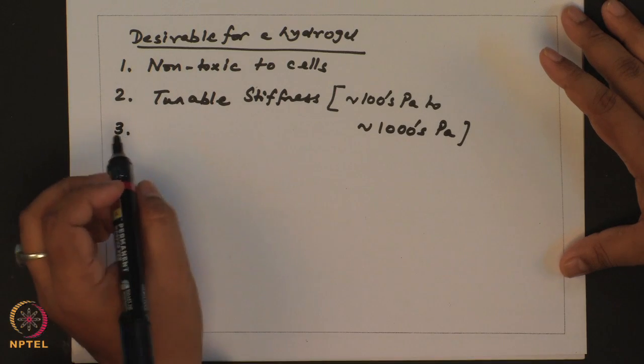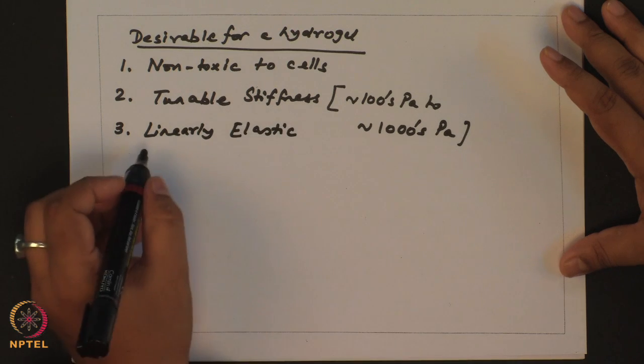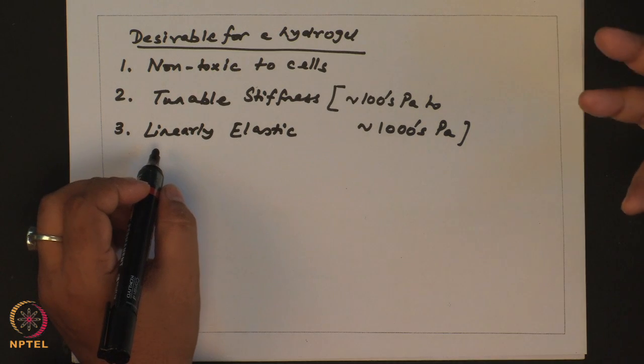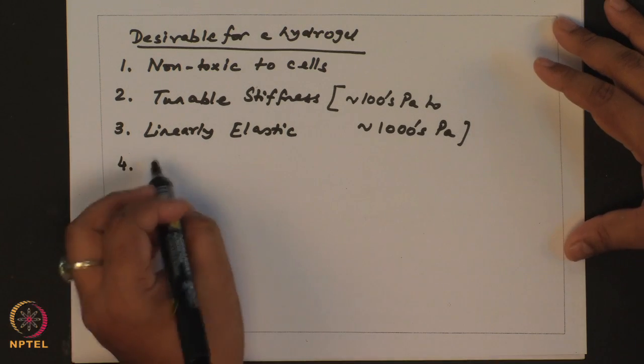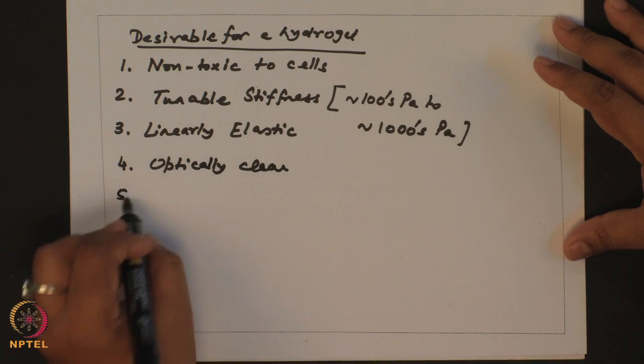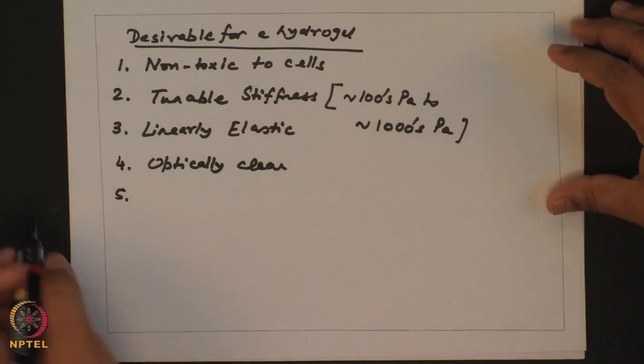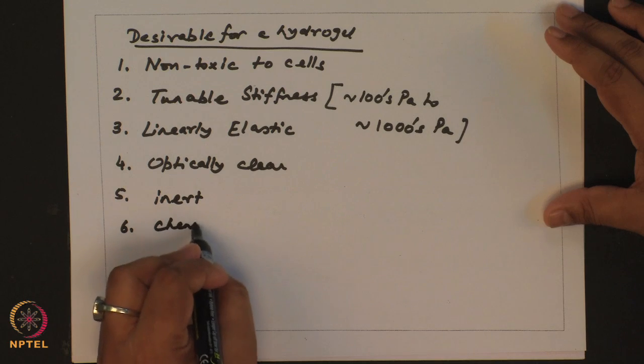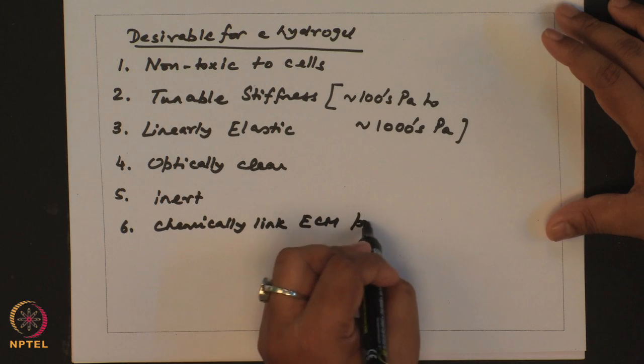It is preferred that the hydrogel is linearly elastic. If the material is linearly elastic then in our next class we will discuss how this provides us ease in order to quantify the forces that cells can exert. The hydrogel should be optically clear because you will culture cells on them. If it's optically clear then you can image them for doing phase contrast studies as well as fluorescence studies. And the other thing, most of these hydrogels are generally inert. So you should be able to chemically link or crosslink your ECM protein of choice.